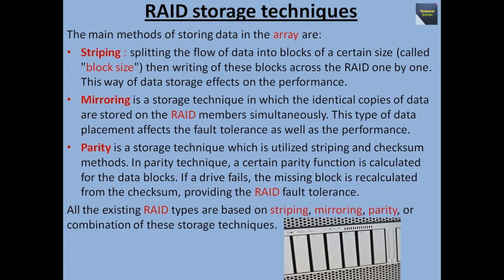Next is mirroring — a storage technique in which identical copies of data are stored on the RAID members simultaneously. This type of data placement affects fault tolerance as well as performance. Next is parity — a storage technique which utilizes striping and checksum methods. In the parity technique, a certain parity function is calculated for the data blocks. If a drive fails, the missing block is recalculated from the checksum, providing RAID fault tolerance. All existing RAID types are based on striping, mirroring, parity, or a combination of these storage techniques.